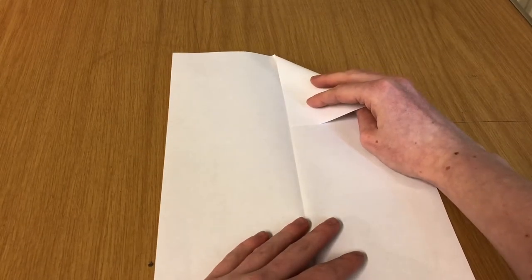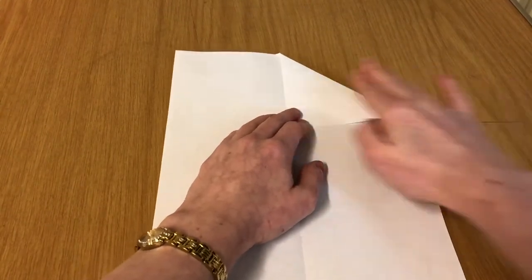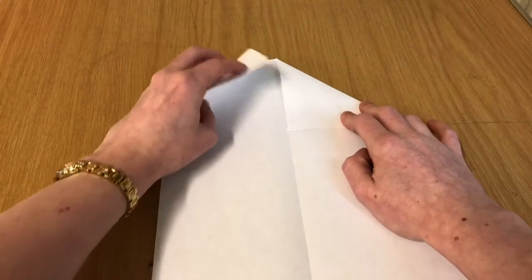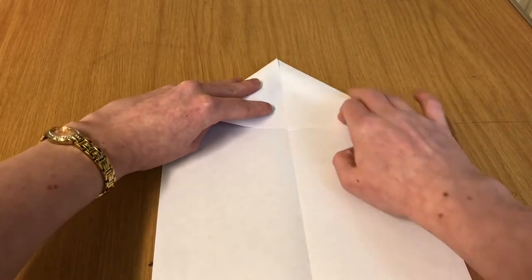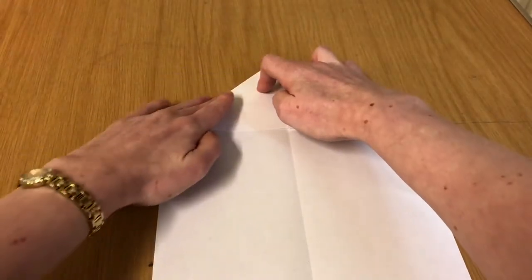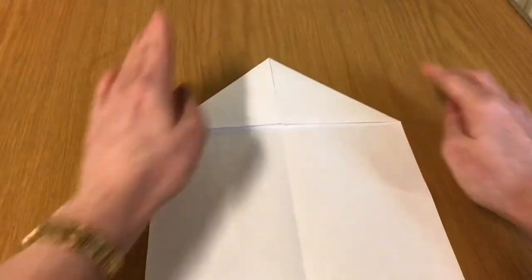Then you're going to take the top two edges and fold them in and down so you've created a triangle. You're going to do the same with the other side, folding it into that center fold. Don't worry, it doesn't have to be terribly neat, but make sure you're really pressing down on those edges.